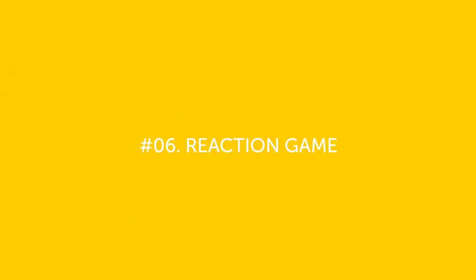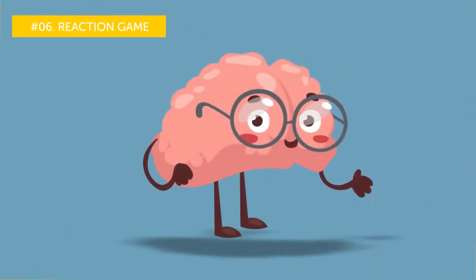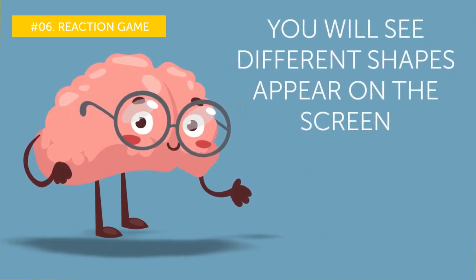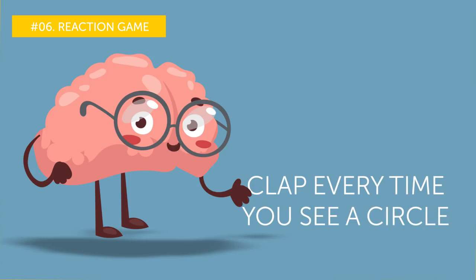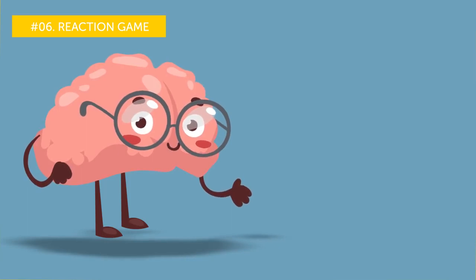Number six, reaction game. Now that you've trained your memory, it's time for a reaction exercise. You will see different shapes appear on the screen. Your task is to clap every time you see a circle. We'll start with a slow easy sequence and then go faster and faster. Ready? Let's go.